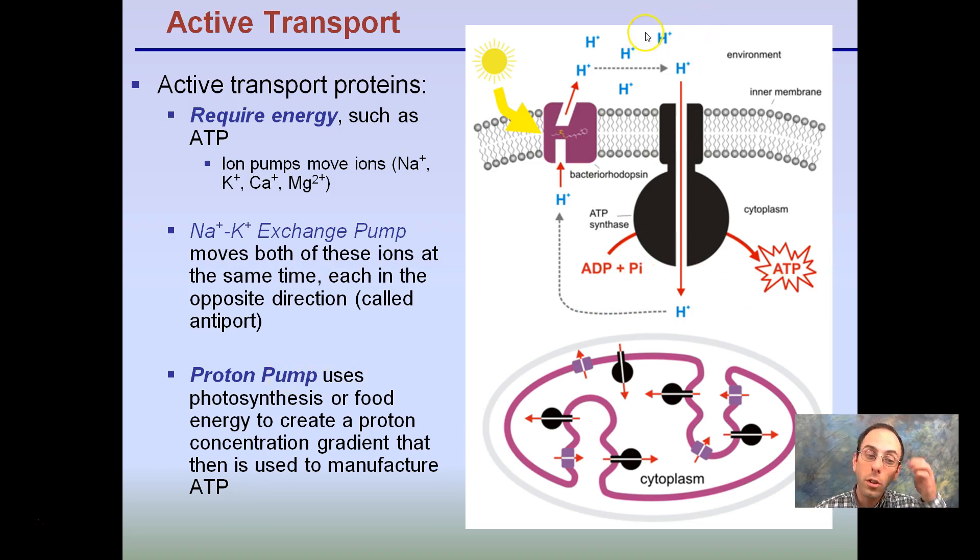and then harnessing that energy through its particular protein, passing it only through one way, and as a result, taking ADP and a free phosphorus to generate ATP. So proton pump, moving hydrogen ions, and photosynthesis, when we go over that, we'll see that in more detail, or food energy, to create this proton concentration gradient that then is used to manufacture ATP. Because there's a lot of protons here, they want to diffuse across. The cell only lets them go through one area, and that's ATP is generated.